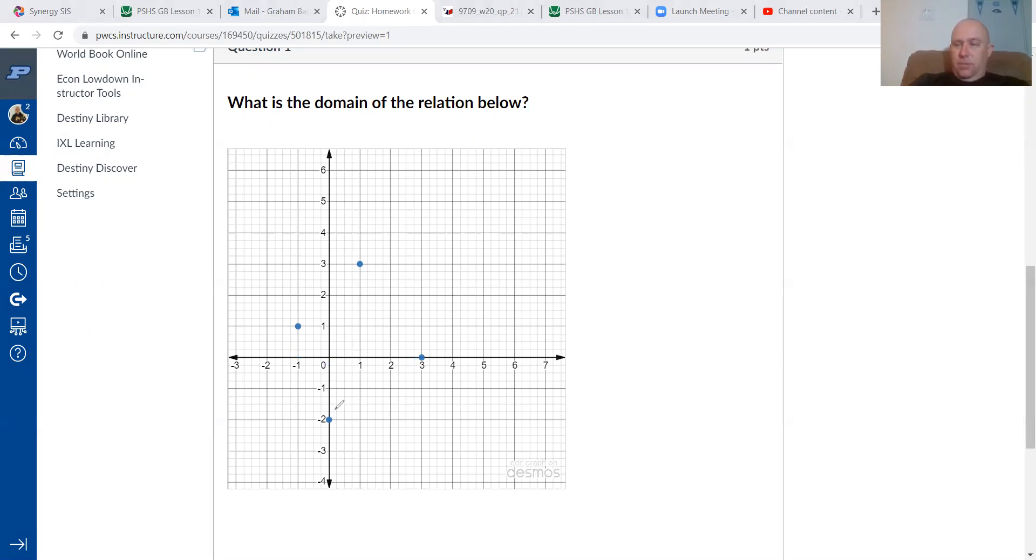Now, not that it asks for this one, but if it asks for the range, do the same thing, but go to the y-axis. So starting at the bottom just so I don't miss any, negative 2, 0, 1, and 3. So a very easy way of just checking in to see exactly what the domain and range is of a particular function.